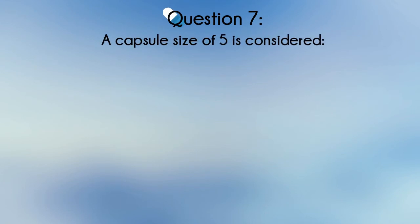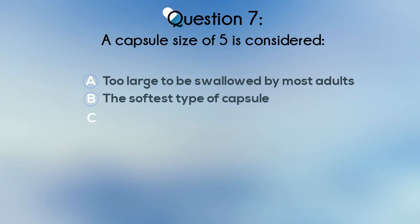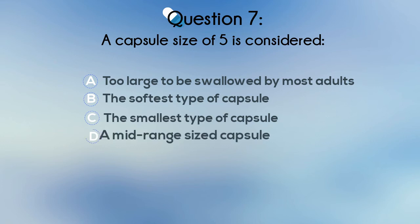Question 7. A capsule size of 5 is considered: A. Too large to be swallowed by most adults, B. The softest type of capsule, C. The smallest type of capsule, or D. A mid-range size capsule.